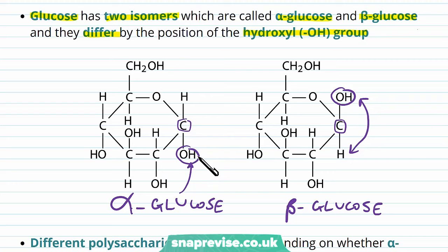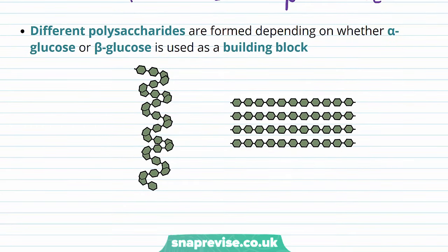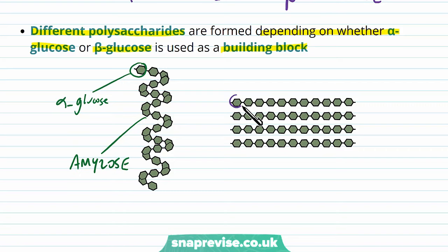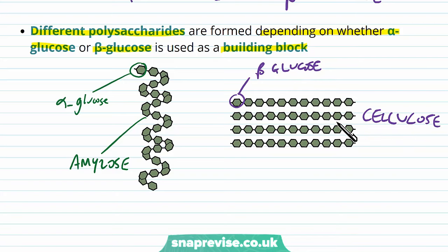You need to know which isomer is which. One way to remember is that in alpha glucose the OH groups are on the same side, while in beta glucose they're on different sides — whatever works for you. Choosing either alpha or beta glucose to build up polysaccharides gives different properties. Polysaccharides made from alpha glucose give amylose, while polysaccharides made from beta glucose give cellulose, which is found in plant cell walls. So depending on what the monomer is, the polymer can be very different.